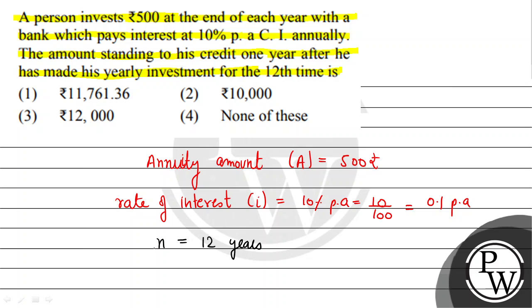What are we asked? First of all, we find out future value. Then we will find out the standing amount after 1 year of his 12th time investment. उसके बाद उसका standing credit amount कितना होगा? This we have to find out.